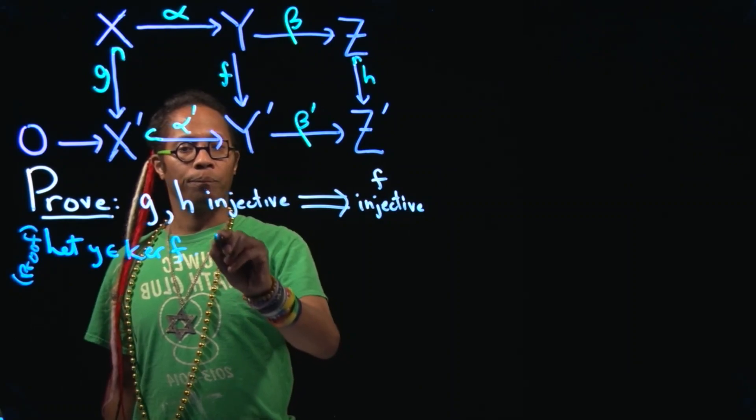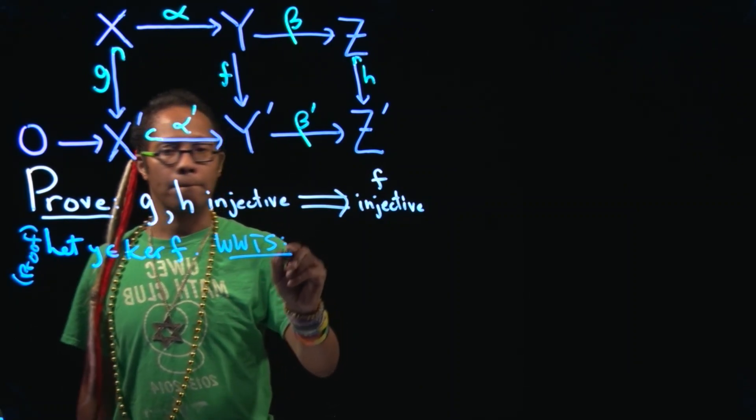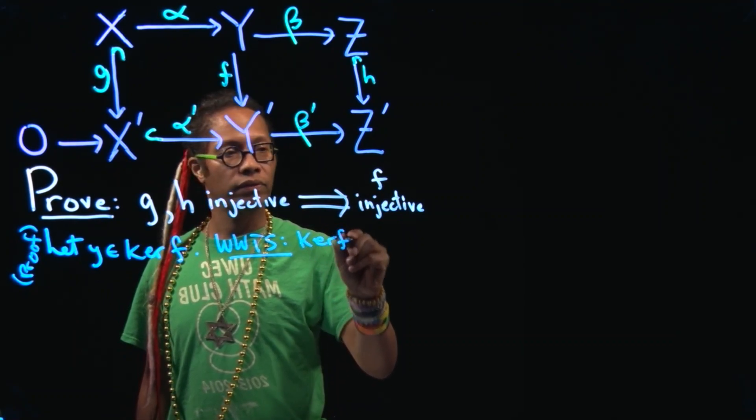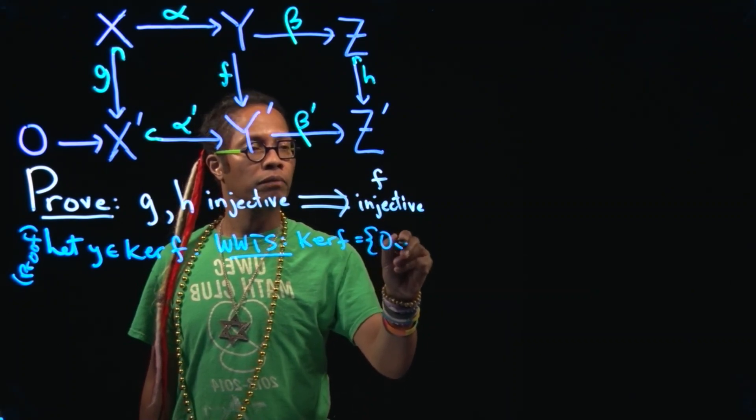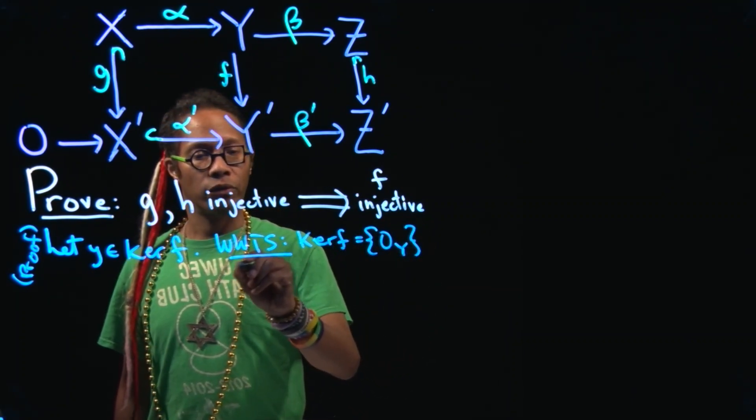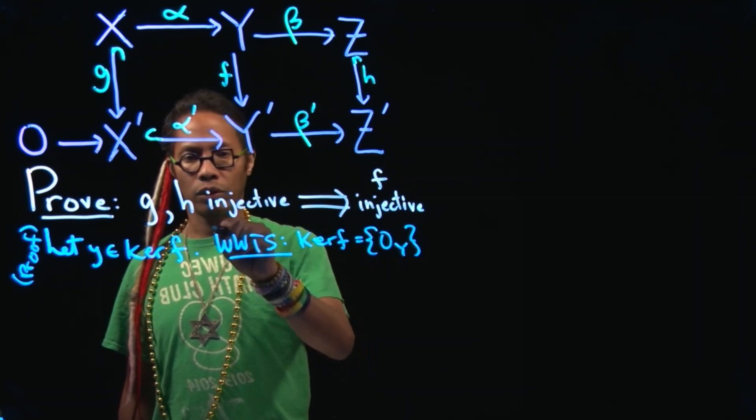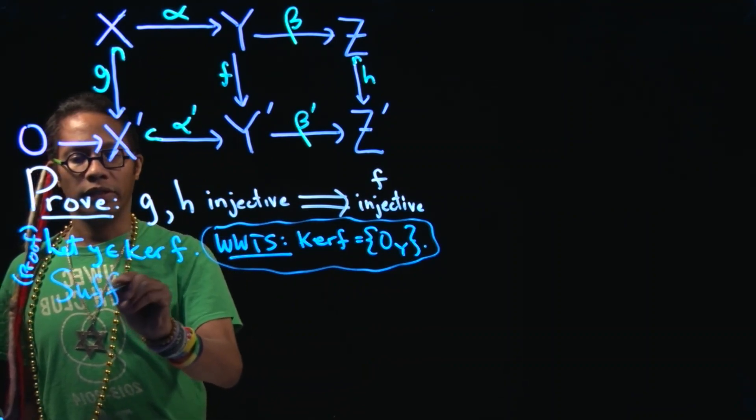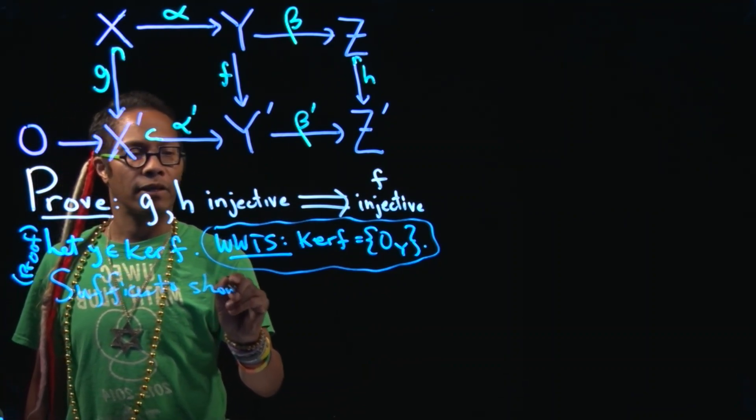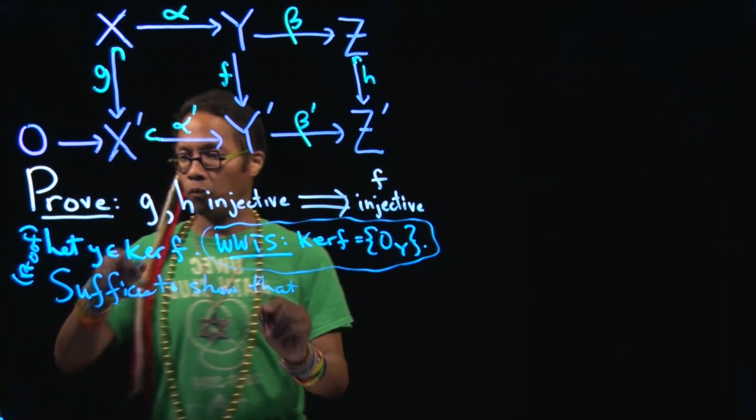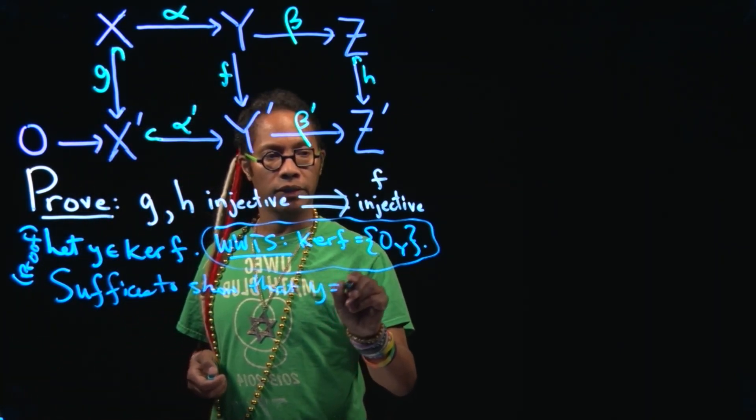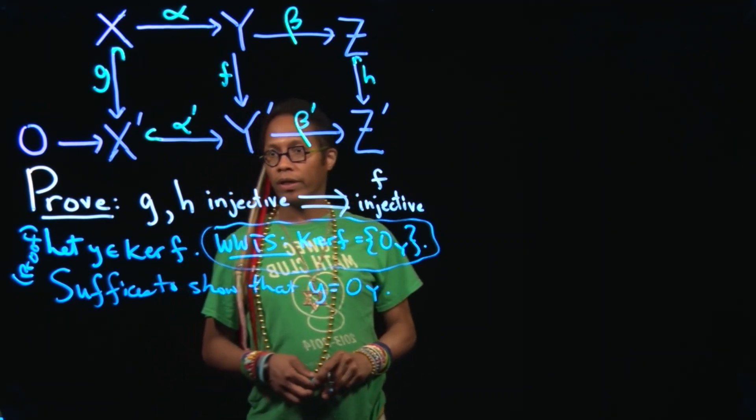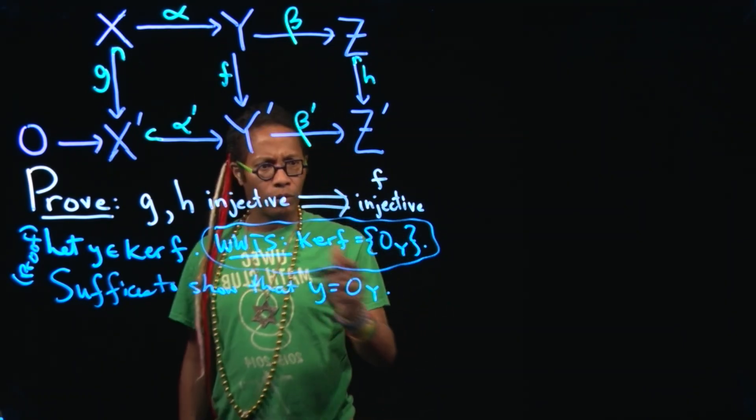So what is it we want to show? We want to show that this kernel of F is trivial. It only contains one element. We'll call it 0 sub Y. So it suffices to show the following. Suffices to show that this Y we picked in the kernel is exactly equal to this 0 sub Y. And then we will get that the kernel is trivial and hence F is injective. So let's just follow our nose.